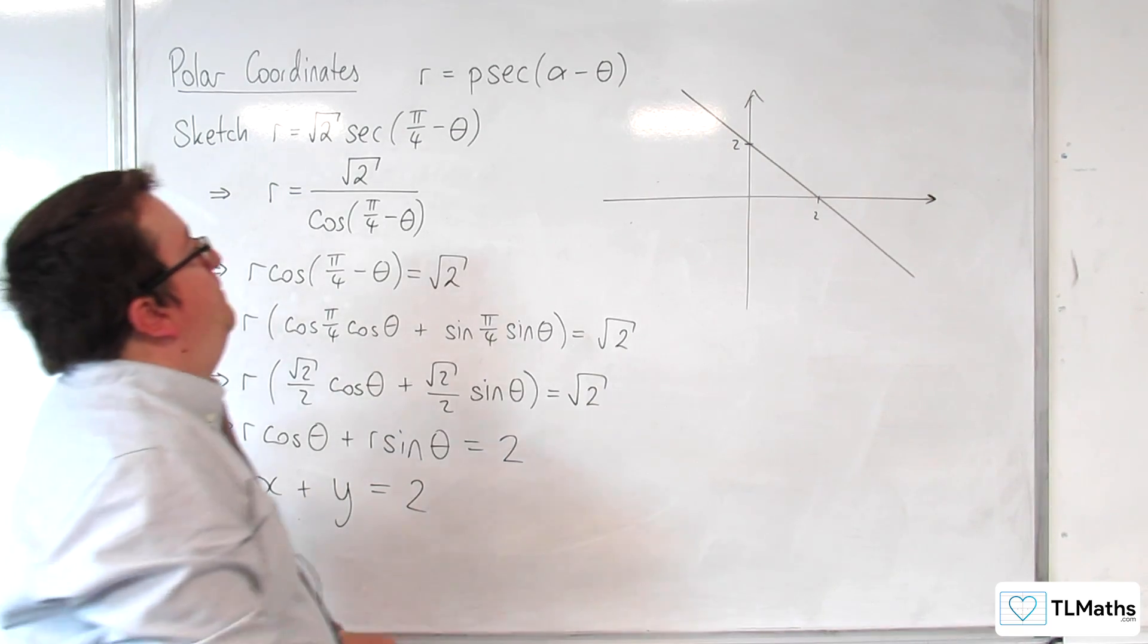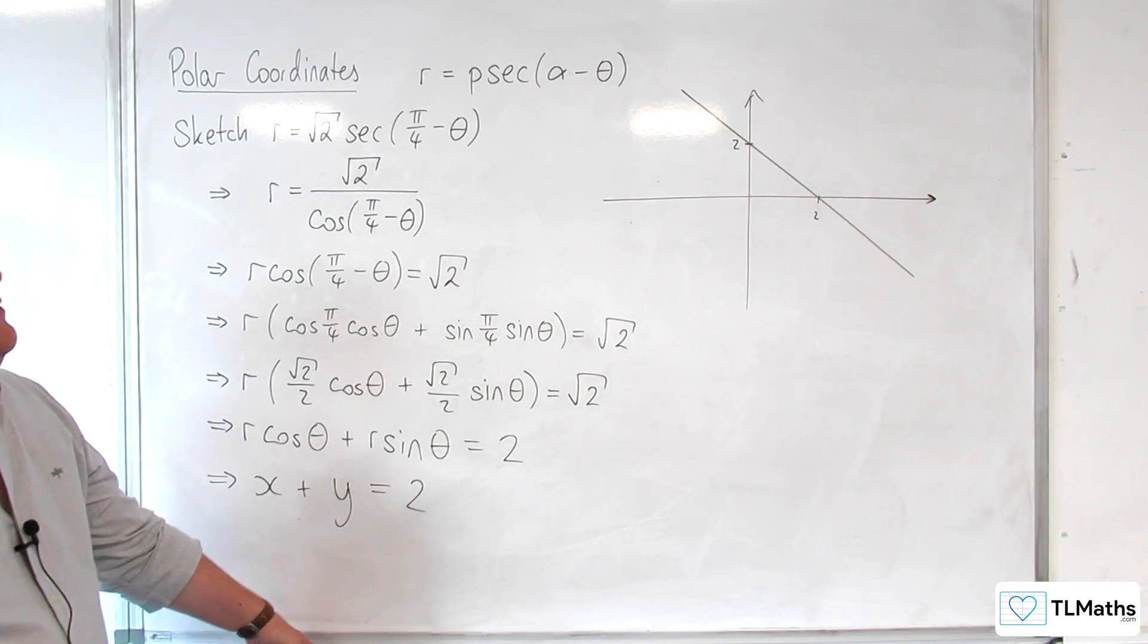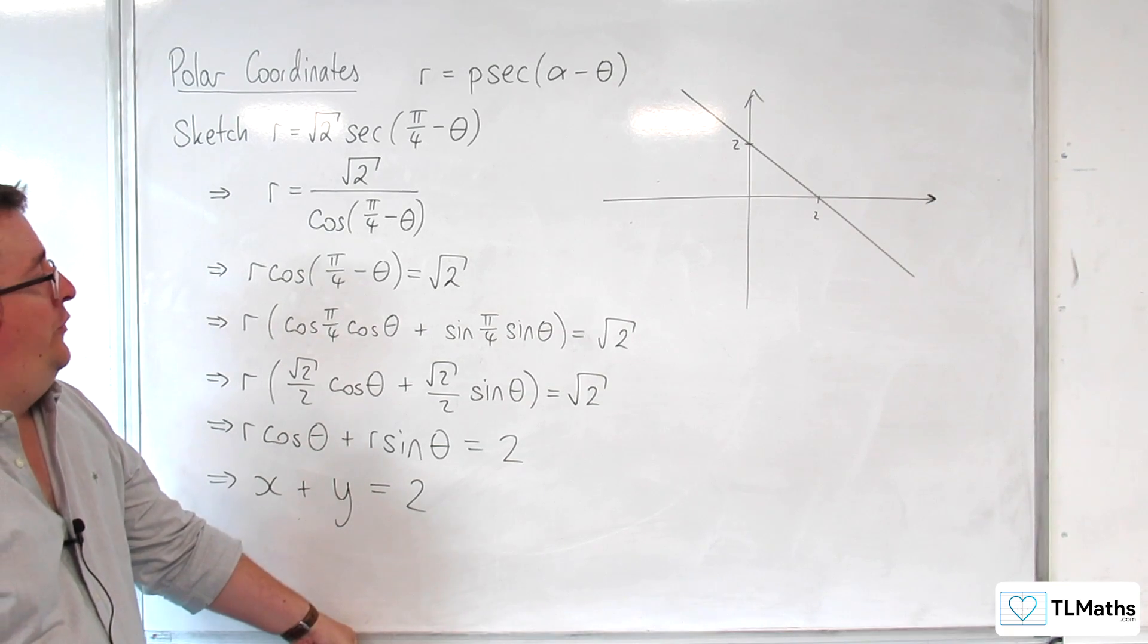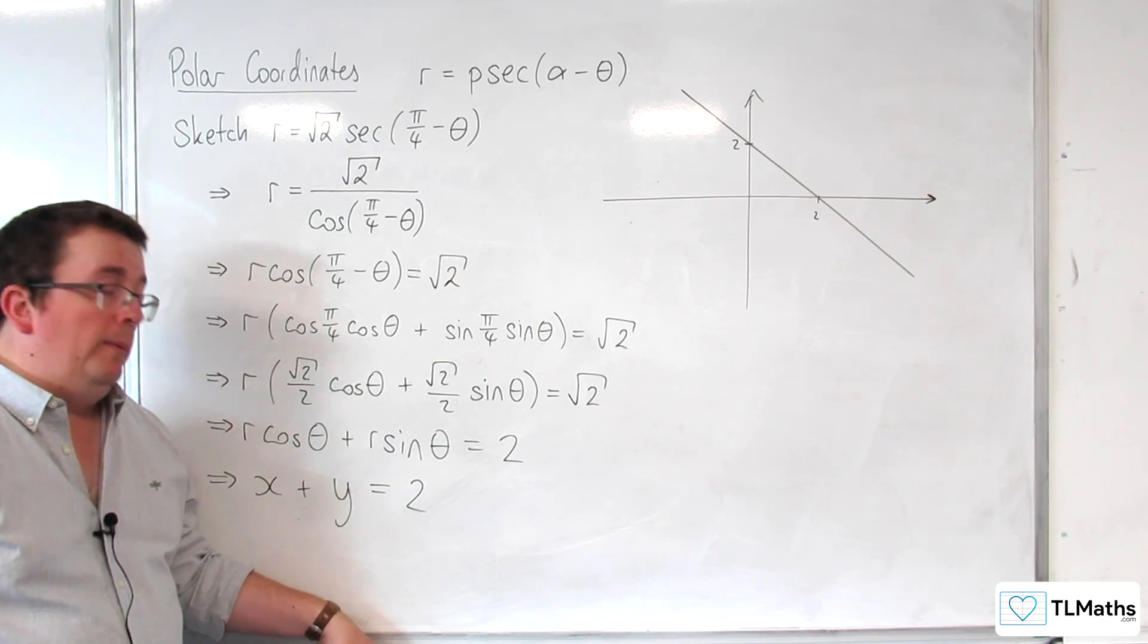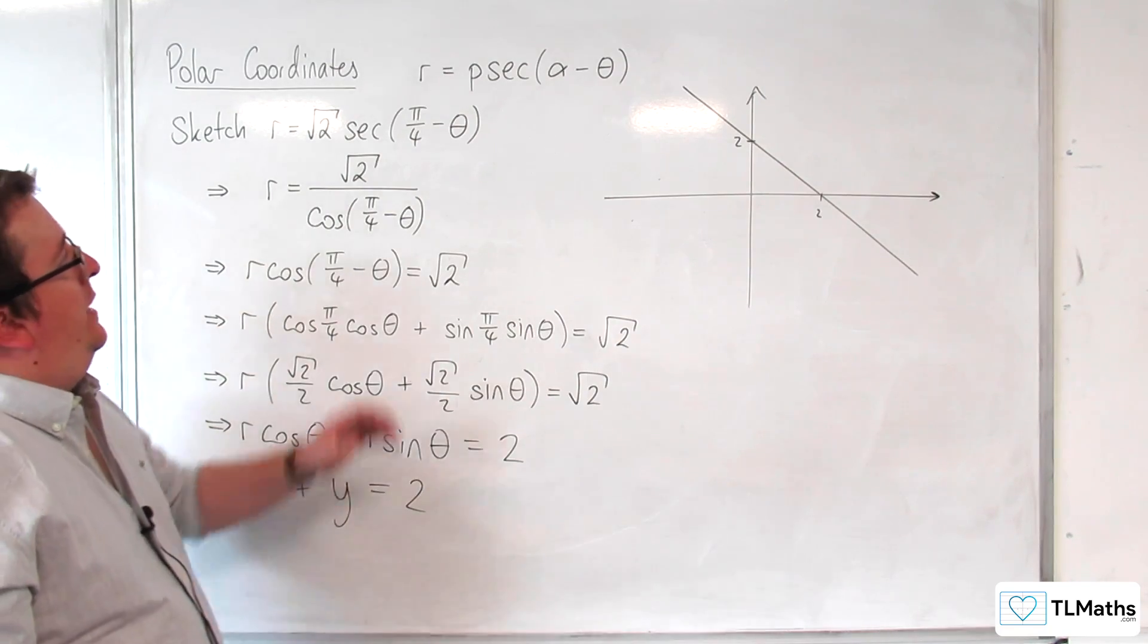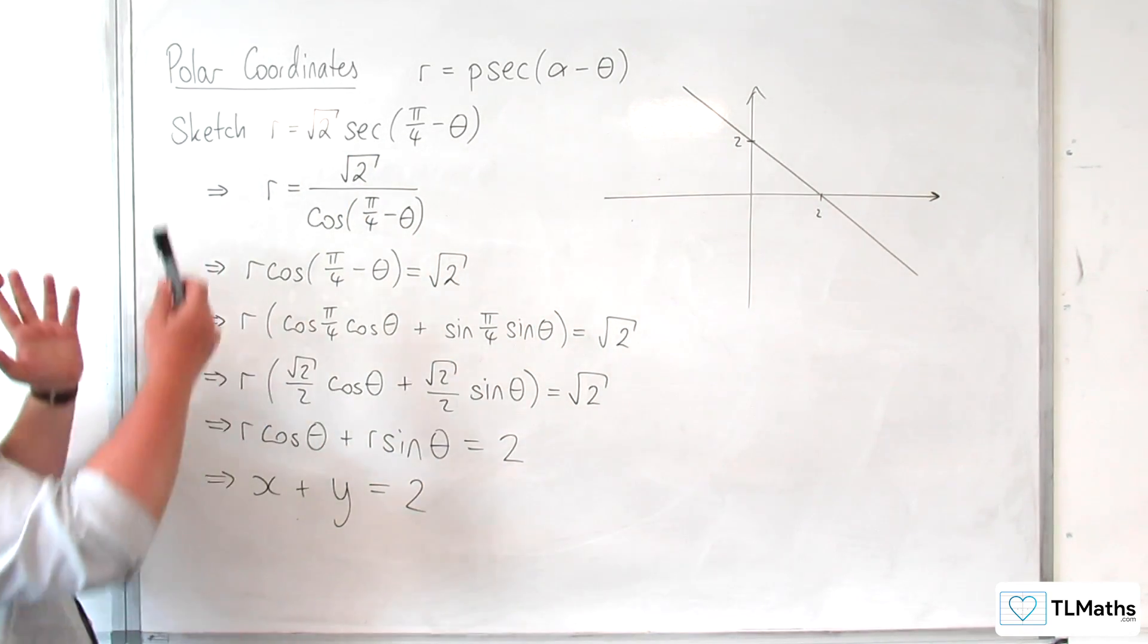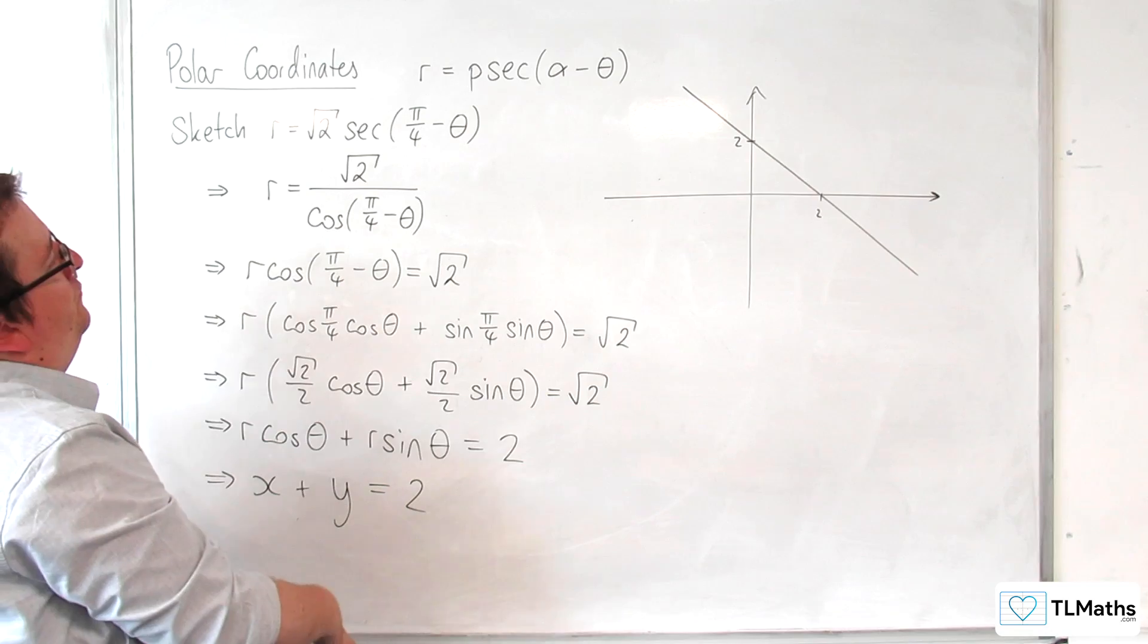So what you'll find is that these represent straight lines. And probably the easiest way to think about sketching them is going through the process that I've just done using the compound angle formula, breaking apart and putting it into Cartesian form. That's probably the easiest way to go about those. But the question is, how does this relate back to that? How could you have read this from that form? Could you have gone through this process without actually converting it into Cartesian form?